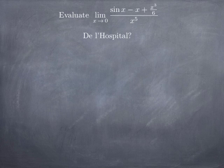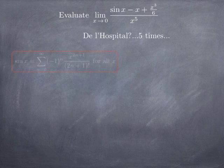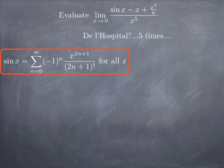You can indeed use L'Hôpital's rule, and I encourage you to try — but you'll see that you need to apply it five times, differentiating top and bottom five times, until you get out of the indeterminate form 0/0. So here we'll look at a way to avoid that and get our answer more quickly, using the power series representation for sin(x) and its first few terms.